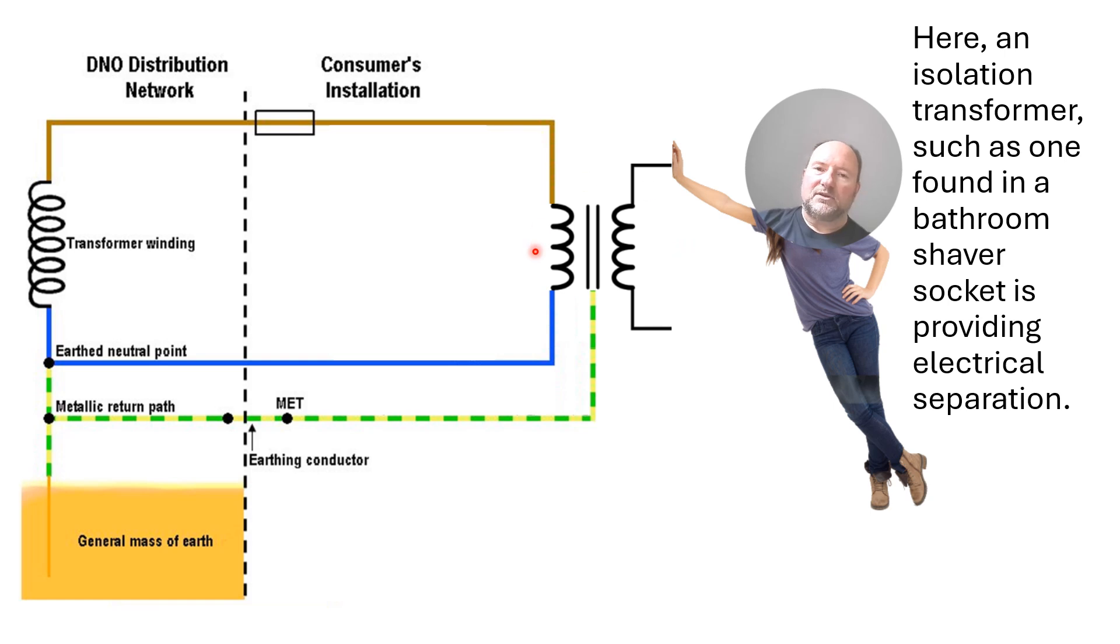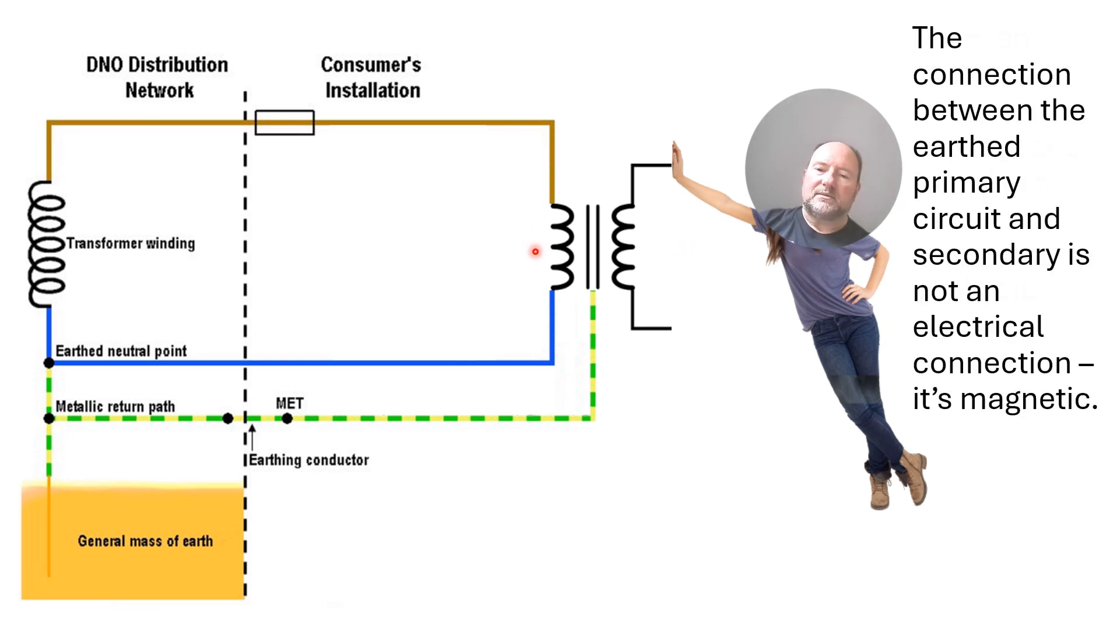This transformer is there to provide you with electrical separation. And what that means is over the electrical separation, there's no electrical connection between the secondary winding and the primary winding circuit. It's not an electrical connection. It's magnetic mutual inductance because it's a transformer.